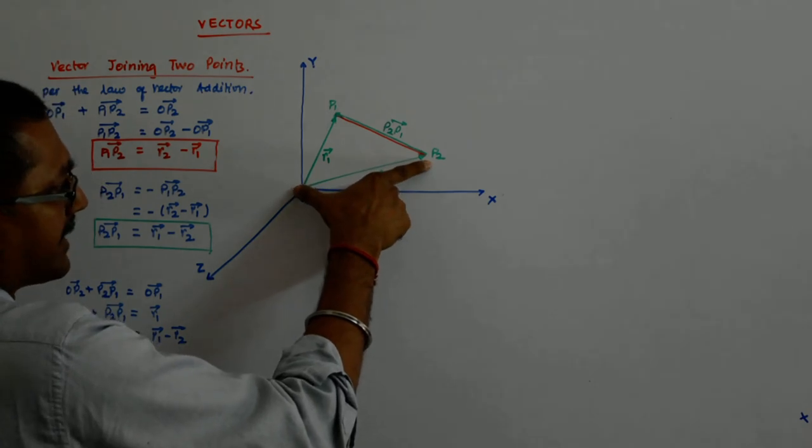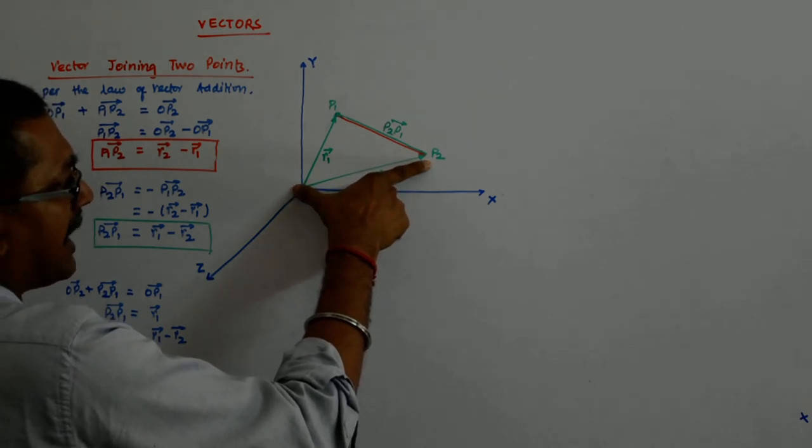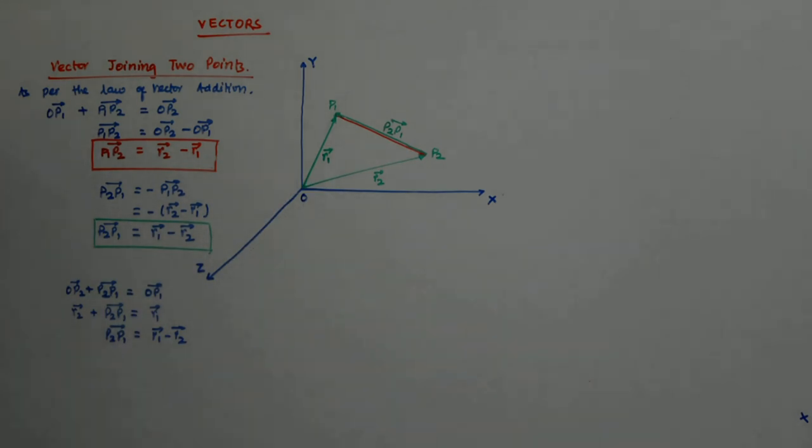So the vector, the position vector at the head minus the position vector at the tail, correct? Position vector at the head minus the position vector at the tail.